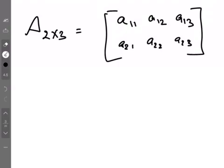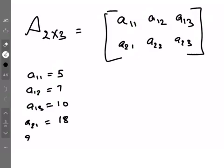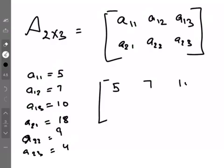So this is a 2 by 3 matrix. This will be 5, 7, 10, 18, 9, 4. So you have to arrange the data in the form of rows and columns that can be represented with the help of a matrix.